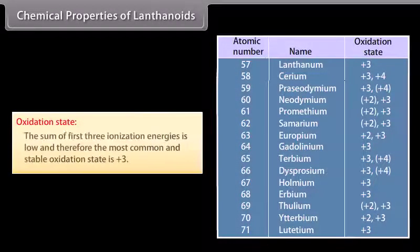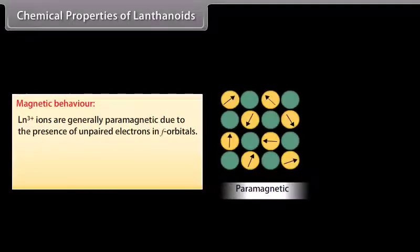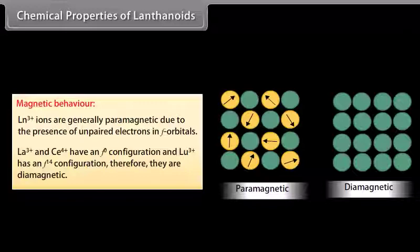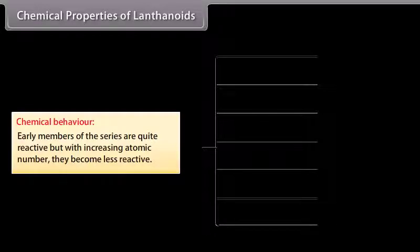The most common and stable oxidation state of lanthanoids is +3, because the sum of the first three ionization energies is low. Ln³⁺ ions are generally paramagnetic due to the presence of unpaired electrons in F orbitals. La³⁺ and Ce⁴⁺ have an f⁰ configuration, and Lu³⁺ has an f¹⁴ configuration; therefore, they are diamagnetic. Early members of the lanthanoid series are quite reactive, similar to calcium, but with increasing atomic number they behave more like aluminum.